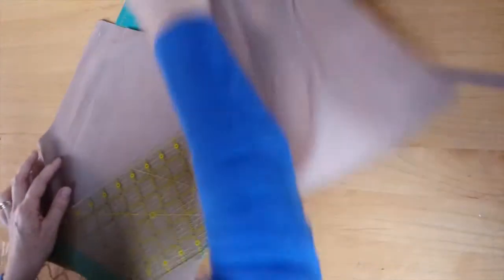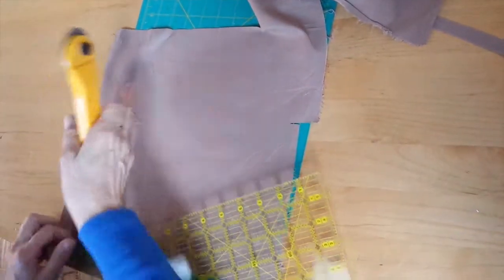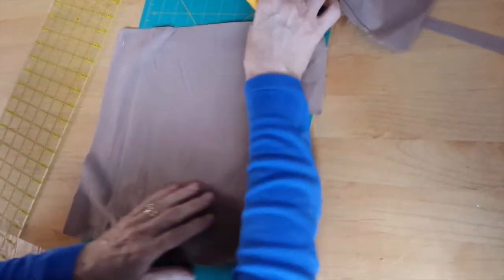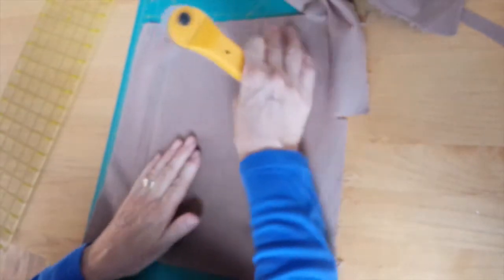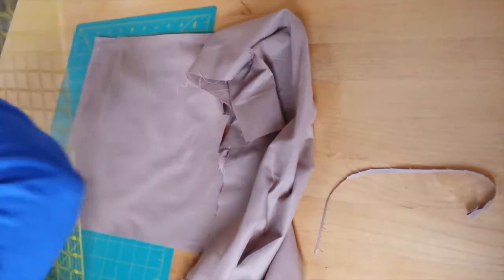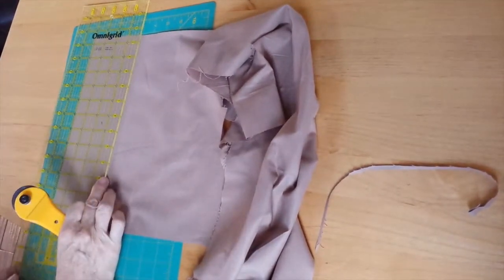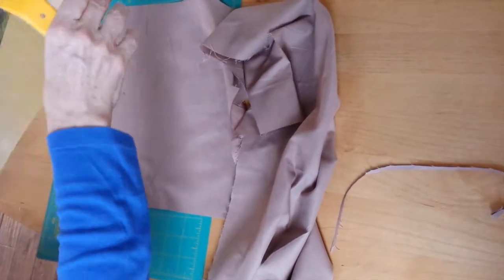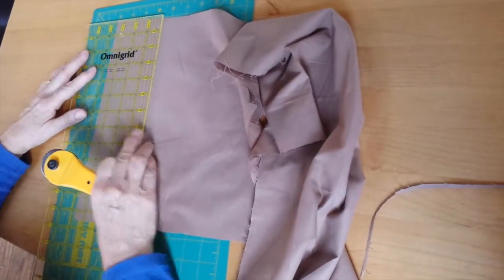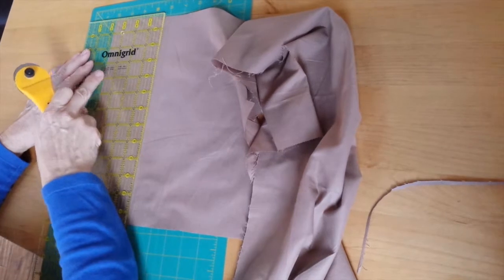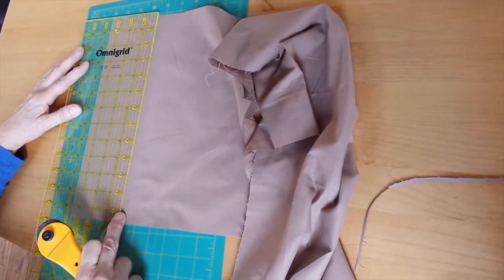Turn it round again. I'm now going to measure from this side in the three and a half inches that I need. I'm going to get my three and a half inches measurement. One, two, three and a half is to there.